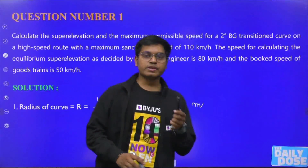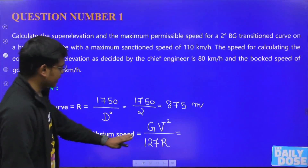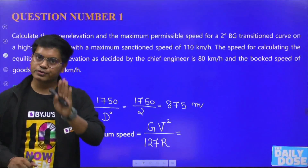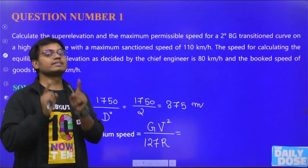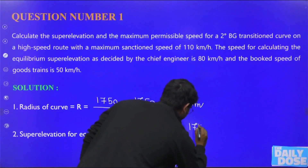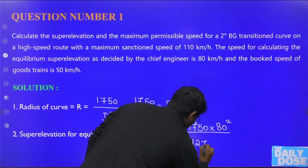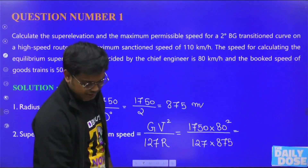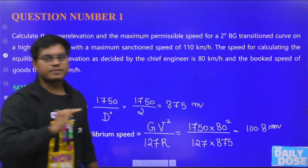Next, find the super elevation for equilibrium speed using the formula: e = GV²/127R. Here G is the dynamic gauge — for broad gauge it is 1750 mm. With V = 80 km/h and R = 875 m: e = 1750 × 80² / (127 × 875) = 100.8 mm.